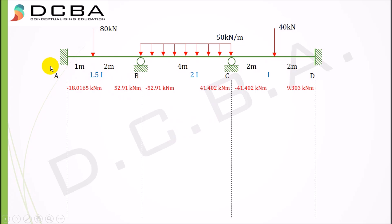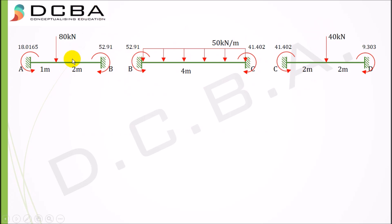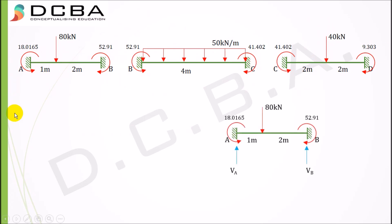These are the values we got from the moment distribution analysis. The shear force diagram and bending moment diagram will be constructed here. Before constructing the shear force diagram, the first step is to get reactions at every support point. We have four supports — two fixed and two intermediate roller supports — and we need reactions at all these points. For that, we'll solve all three segments separately: AB, BC, and CD. Let's start with AB, designating the reactions as VA and VB.